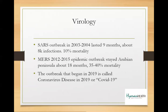SARS came before — the first outbreak in 2003–2004 lasted only nine months, with about 8,000 infections and a 10% mortality rate. MERS is a closely related cousin with similarly high mortality rates. When you compare those large mortality rates to the current infection, you see a big difference. Those past outbreaks also didn't last very long. Keep that in mind.